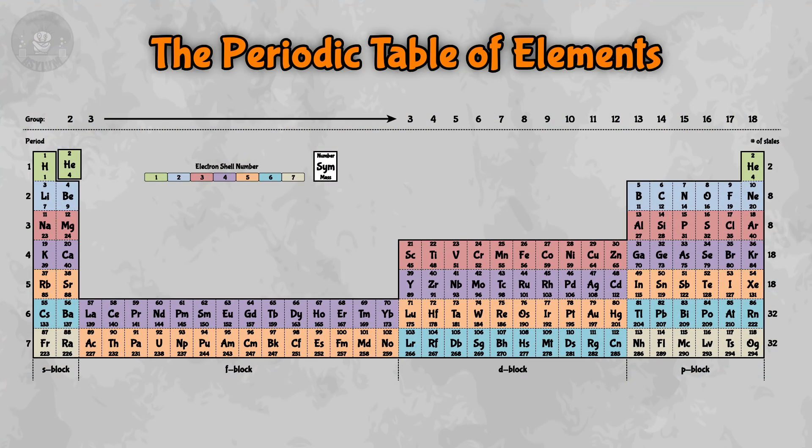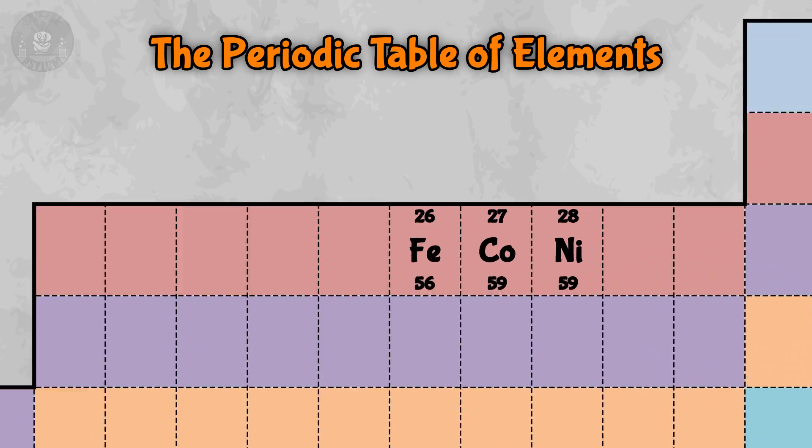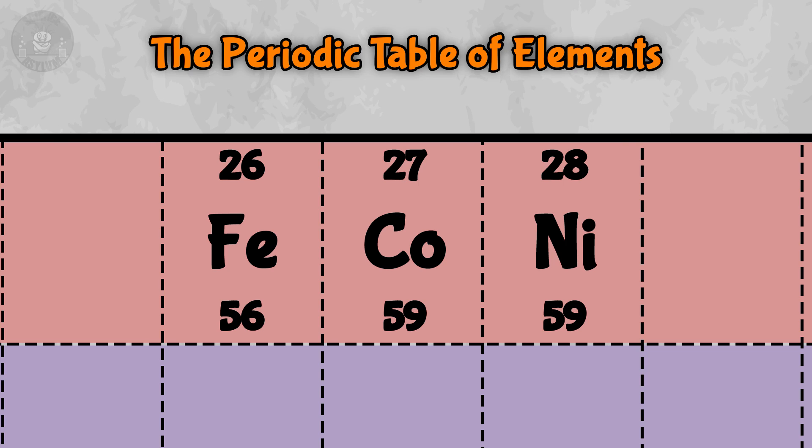The point is, magnetic materials are hard to come by. In fact, there are only four elements that do this at room temperature. Iron, Cobalt, Nickel, and Gadolinium. Beyond that, we either need to get the material really cold or build the material using a specially designed molecule. Or both.